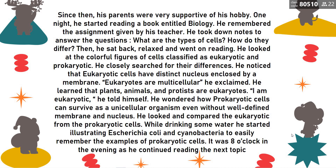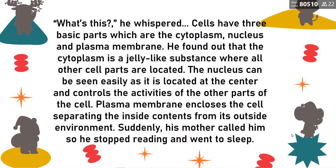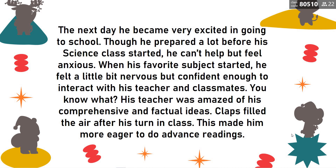It was 8 o'clock in the evening as he continued reading the next topic. He whispered: Cells have three basic parts — the cytoplasm, nucleus, and the plasma membrane. He found out the cytoplasm is a jelly-like substance where all other cell parts are located. The nucleus can be seen easily as it is located at the center and it controls the activities of the other parts of the cell. The plasma membrane encloses the cell, separating the inside contents from its outside environment. Suddenly, his mother called him so he stopped reading and went to sleep.